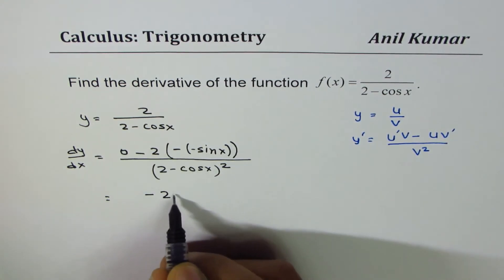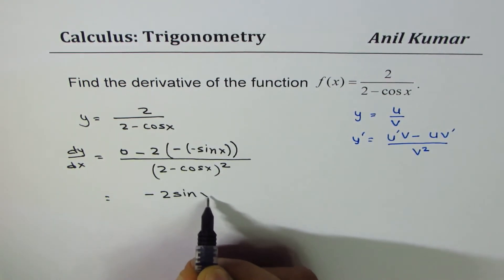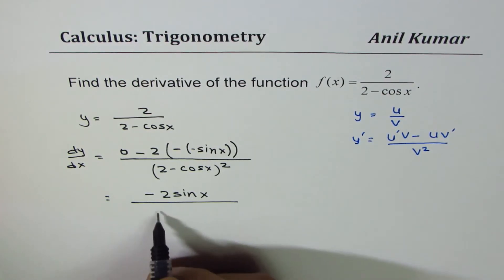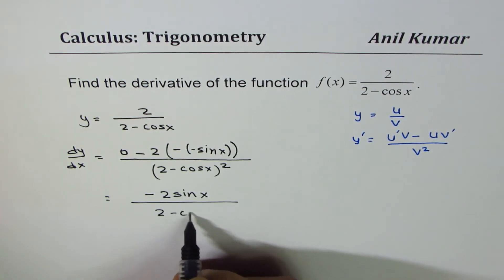and is 2 sin x. Divide by 2 minus cos x whole square.